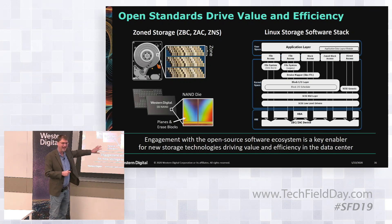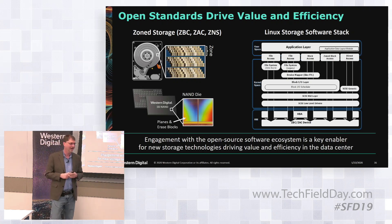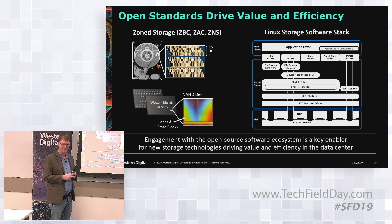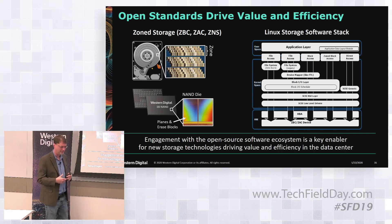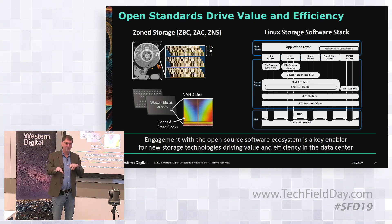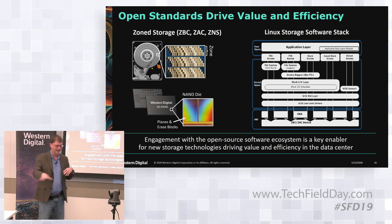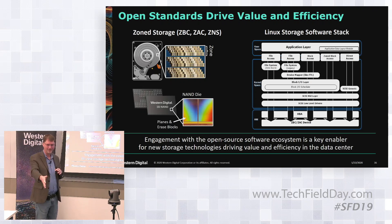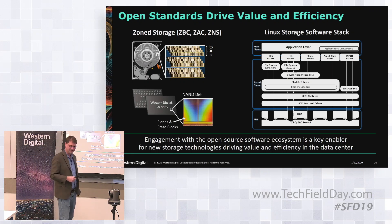NAND always had this constraint. NAND has erase blocks, and within an erase block you tend to want to write pages sequentially. When NAND was introduced into a world where HDD was the dominant technology, they put a flash translation layer on the NAND to make it look like an HDD. So when you look at an SSD today, it has this indirection system on it already. You can read or write any block arbitrarily, but the SSD is rearranging things internally — you think you're writing at one LBA, but in reality it's written somewhere else on the SSD.